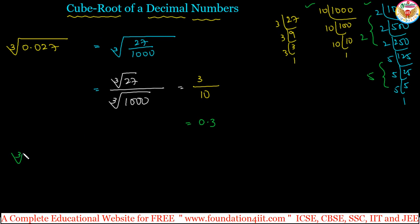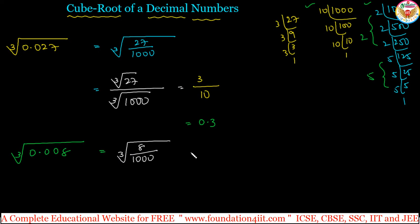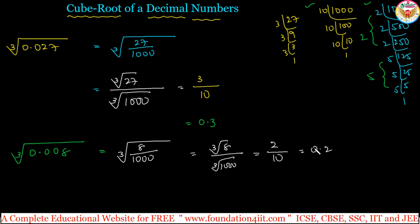One more example: cube root of 0.008. Convert the given decimal number into a fraction — it has 3 decimal places (1, 2, 3), so it is the cube root of 8 by 1000. Cube root of 8 is 2, and cube root of 1000 is 10, so the answer is 2 by 10, which is 0.2.